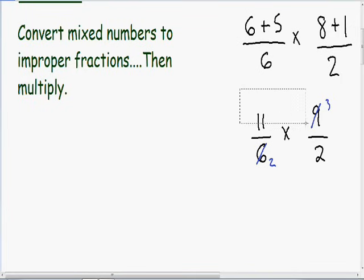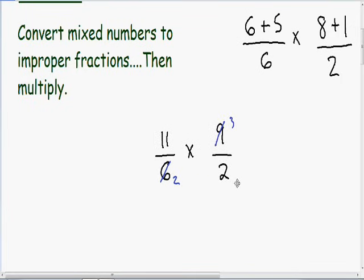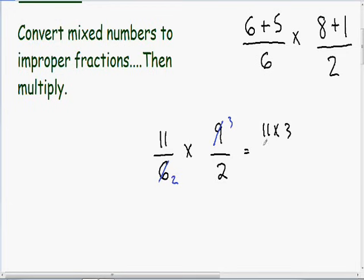So now I'm just going to move this over so I have a little bit more space. I'm going to multiply these two fractions — multiplying numerators and denominators. In our numerator we have 11 times 3, and in our denominator we have 2 times 2. So in our numerator, 11 times 3 is just 33, and in our denominator, 2 times 2 is just 4. So now we have a final answer of 33 over 4.